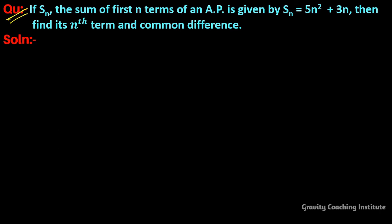In this question, the sum of first n terms of an AP is given by Sn equal to 5n squared plus 3n. We need to find its nth term and common difference.